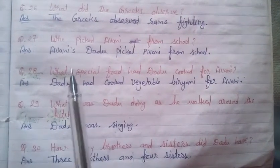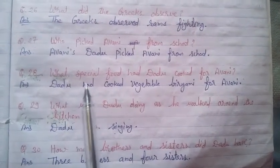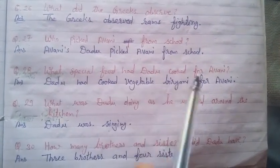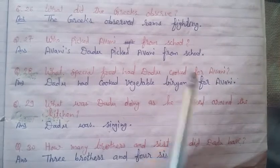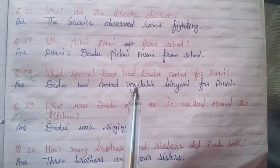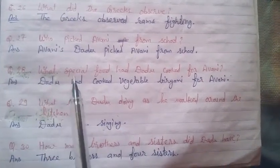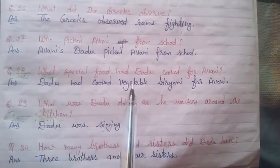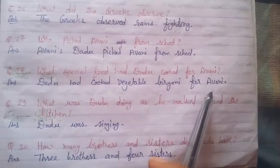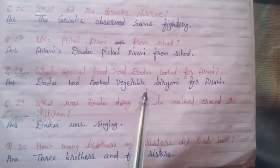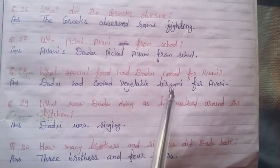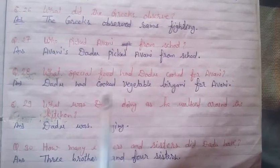Question number 28: What special food had dadu cooked for Aoni? Dadu ne Aoni ke liye kaun sa special food banaya tha? Dadu had cooked vegetable biryani for Aoni. Dadu ne Aoni ke liye vegetable biryani banayi thi.